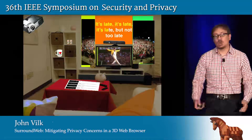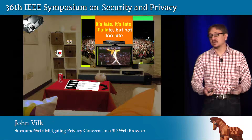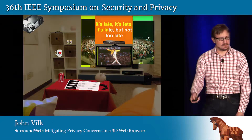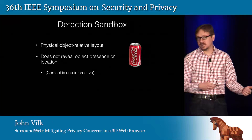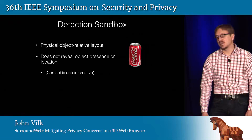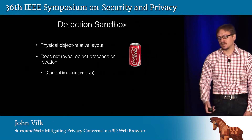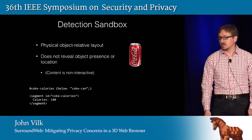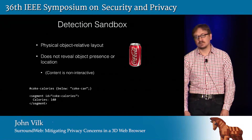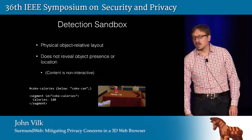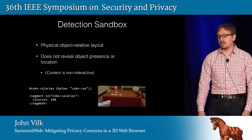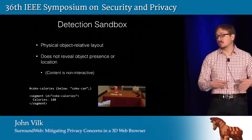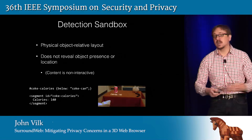But we are forgetting about one thing — what about that snack calorie counter? The web page needs to know when recognized snacks are in the room without knowing if the snacks are there at all. That's where the detection sandbox comes in. The detection sandbox lets applications place content relative to physical objects in the room without revealing the object's presence or location. Content in the sandbox is non-interactive. The web page uses CSS to specify constraints that reference objects by name. When an object detector within SurroundWeb detects the specified object, SurroundWeb asynchronously solves the constraints for a rendering location. When a Coke can is placed on the table, its calorie information appears below it. The web page receives no callback when content in the detection sandbox appears. To prevent side channels, SurroundWeb eagerly renders every content in the sandbox to prevent the server from detecting an object by, say, an image GET request.